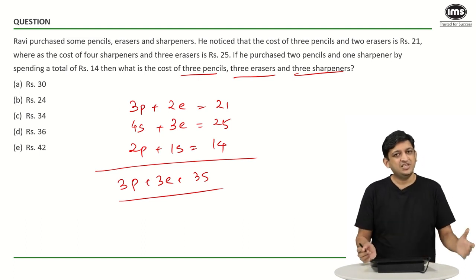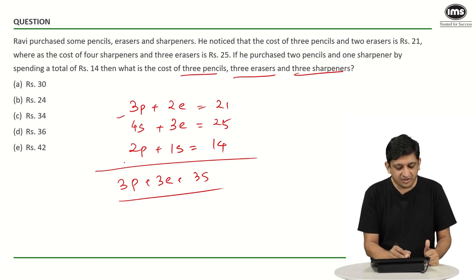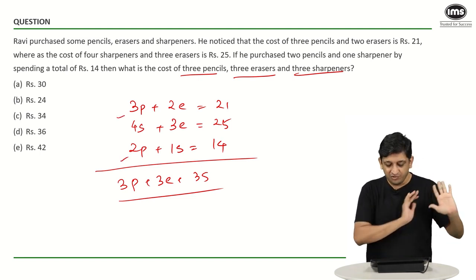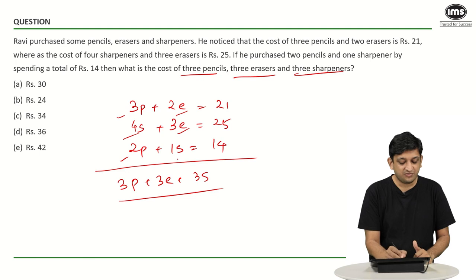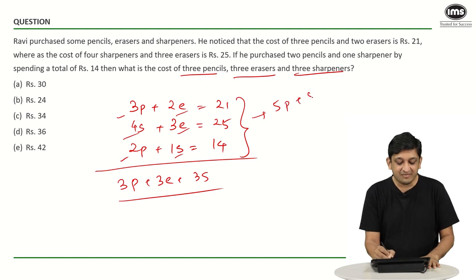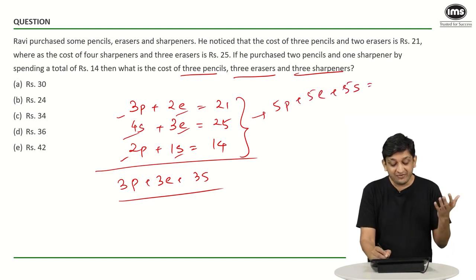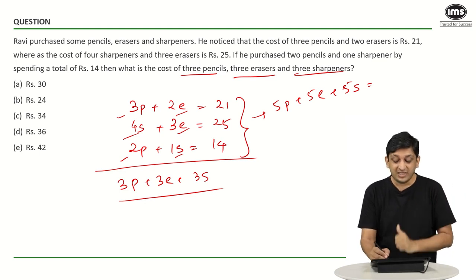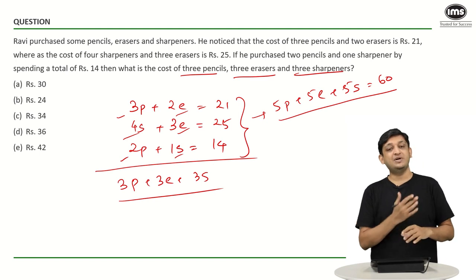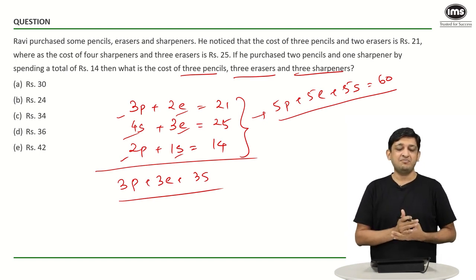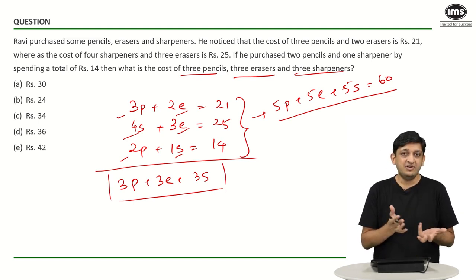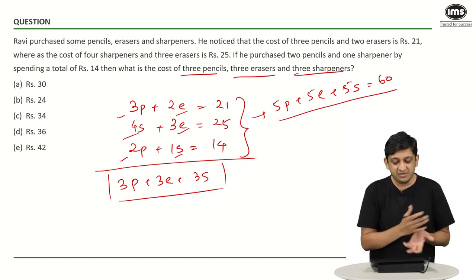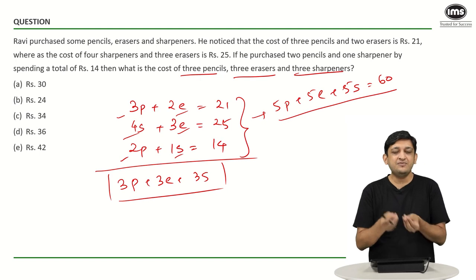Looking at the data: the first equation accounts for three pencils, the third for two pencils — a total of five pencils. Erasers: two plus three equals five. Sharpeners: four plus one equals five. So combining all three equations, five pencils plus five erasers plus five sharpeners equals 21 plus 25 plus 14, which is 60. So P plus E plus S equals 12.